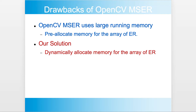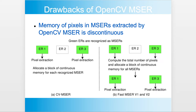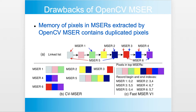First, it pre-allocates memory for the array of data structure ER, while in our two algorithms, we dynamically allocate the memory. Second, in OpenCV MSER, the memory for all MSERs is discontinuous. However, we allocate a block of continuous memory for all MSERs.